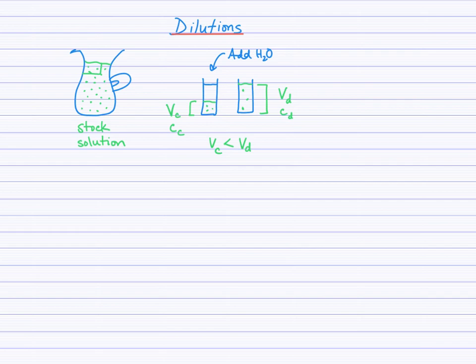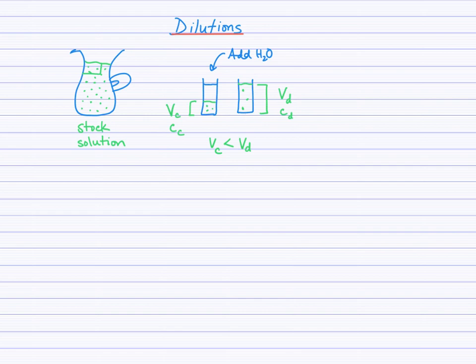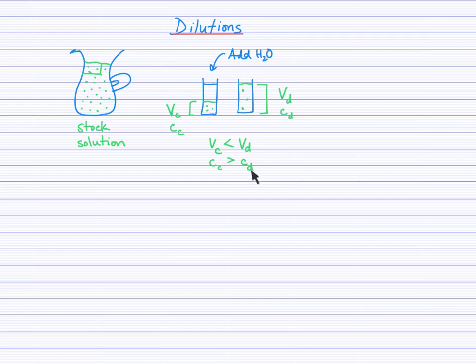How about concentration? How does the concentration of the concentrated solution compare to the concentration of the diluted solution? We have three dots in the smaller volume compared to three dots in the larger volume. The concentration of the concentrated solution is greater than the concentration of the diluted solution. We have the same number of moles just in a larger volume, and that makes the concentration lower — when the denominator is larger, the value of the quotient becomes lower.